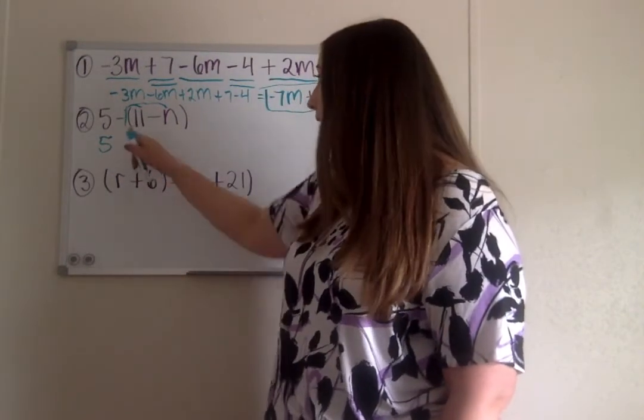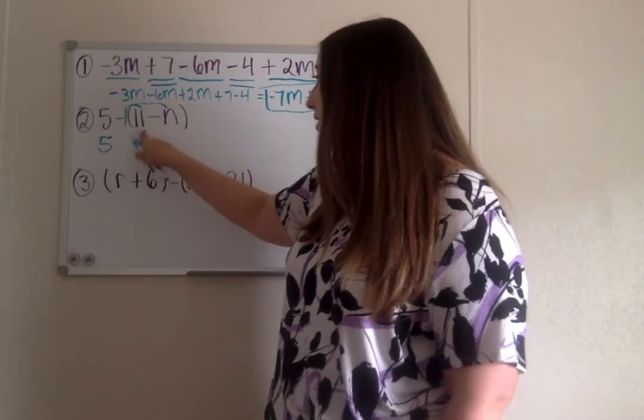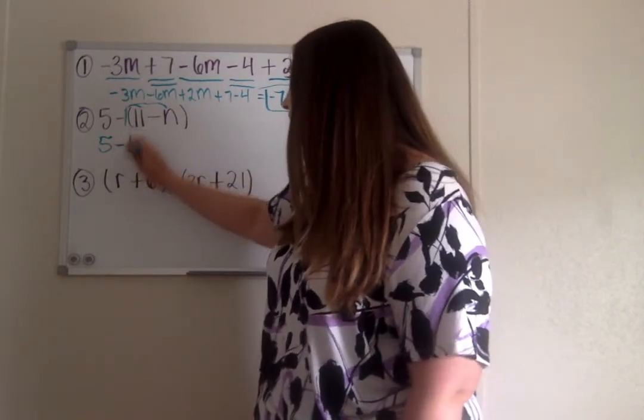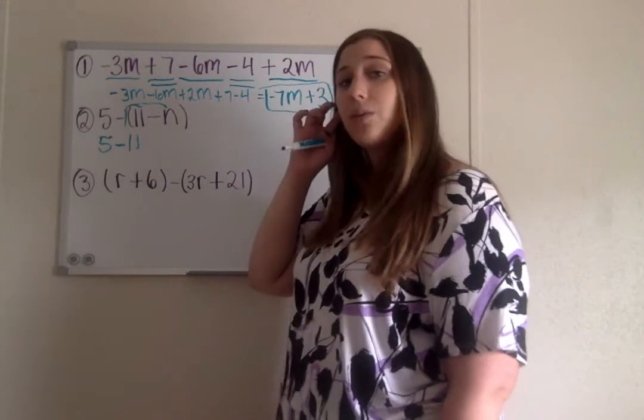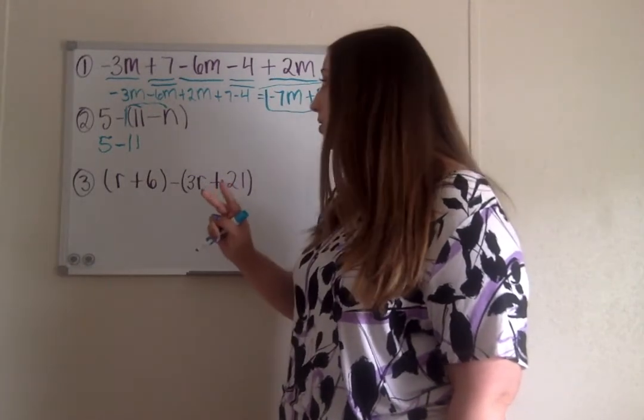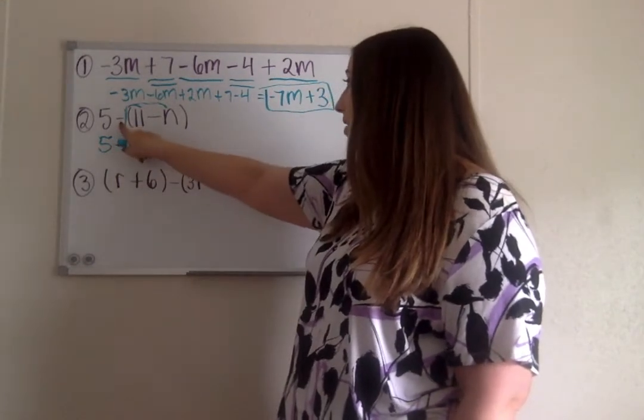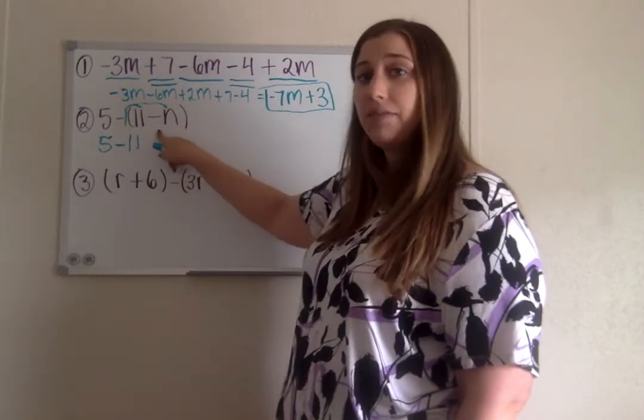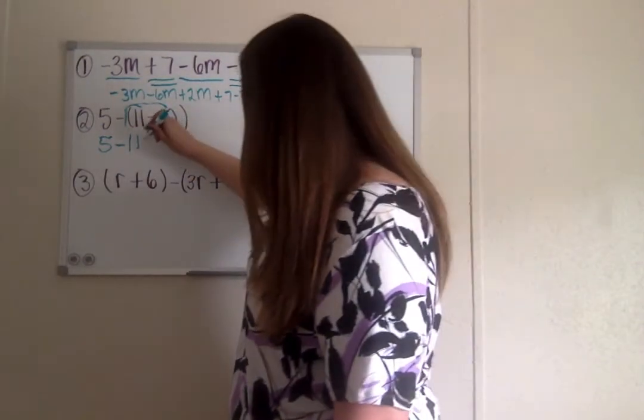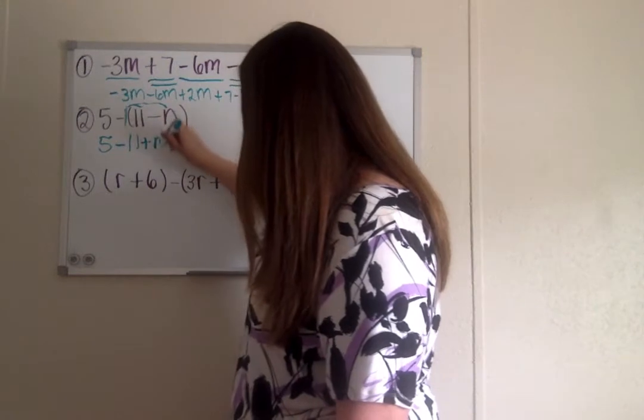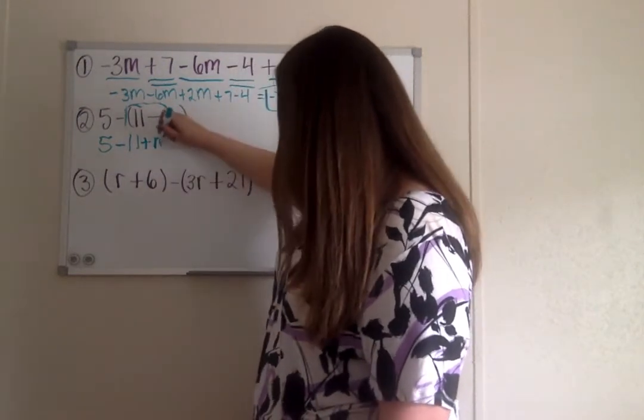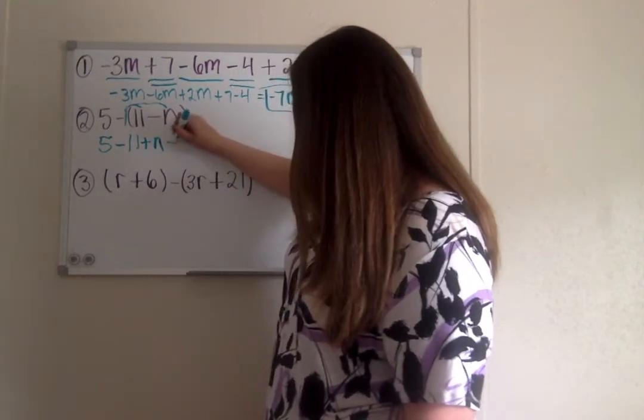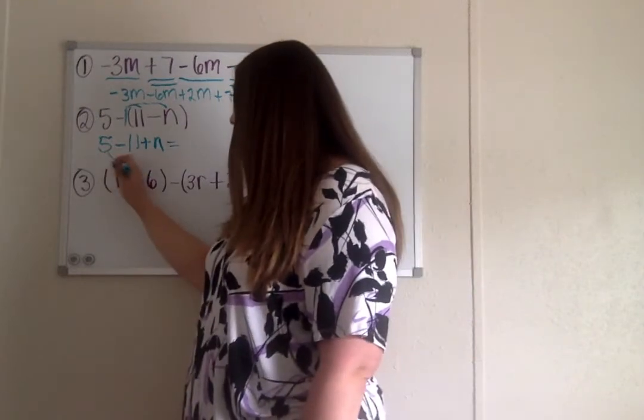The 5 is still there, we didn't do anything with it. But now distributing negative 1 times 11, we get negative 11. And then here we have to be careful because we're multiplying two negatives. We're multiplying this negative 1 times negative n, and remember two negatives give us a positive, so now we have plus n.